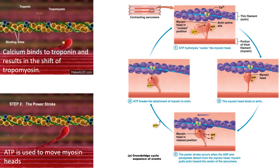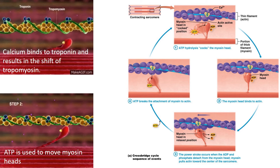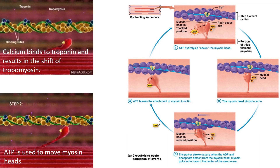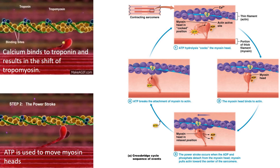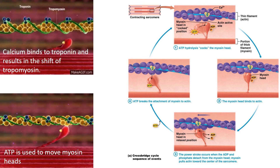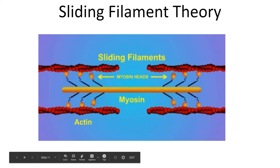Here's how the cross bridge forms: calcium from the sarcoplasmic reticulum attaches to troponin, which moves tropomyosin from the active site, making it available for myosin heads to attach. A covalent bond in ATP is broken and the energy is used to change the shape of the myosin head so that it can attach to the active site, converting ATP to ADP and a free phosphate. Once a cross bridge forms between actin and myosin, ADP is released and the myosin head returns to its original shape, pulling the actin filament with it.